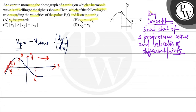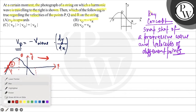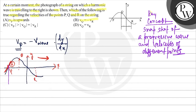So point P is going down because the velocity of point P equals minus of the velocity of the wave multiplied by a positive slope, giving a negative (downward) velocity. Now let's look at vQ and vR — examining the slope at position R.